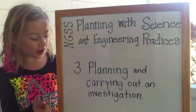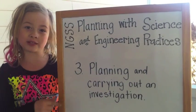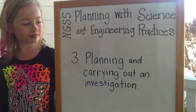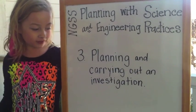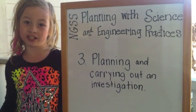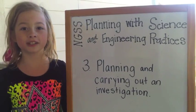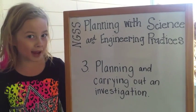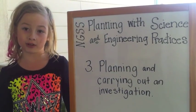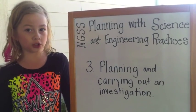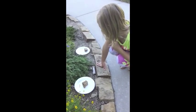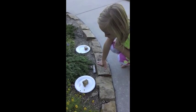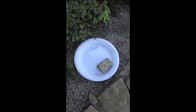Now we're ready for Practice 3, and this is one of my favorites: planning and carrying out an investigation. It's awesome. For example, maybe you want to find out what ants like better — salt or sugar. We are curious kids and we love to find things out.